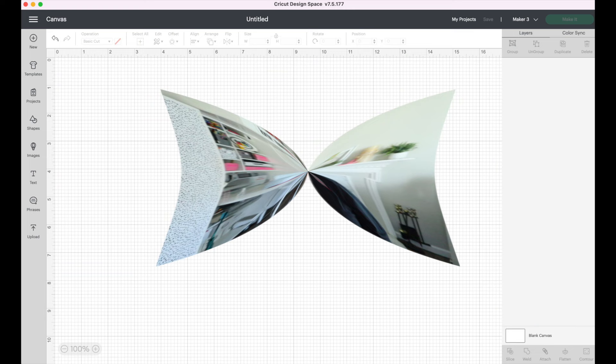So we're going to use adhesive vinyl. Like I said, 651 Oracle, it's a permanent adhesive vinyl. And without further ado, let's get started. I'm going to use my Cricut and let's cut some letters.